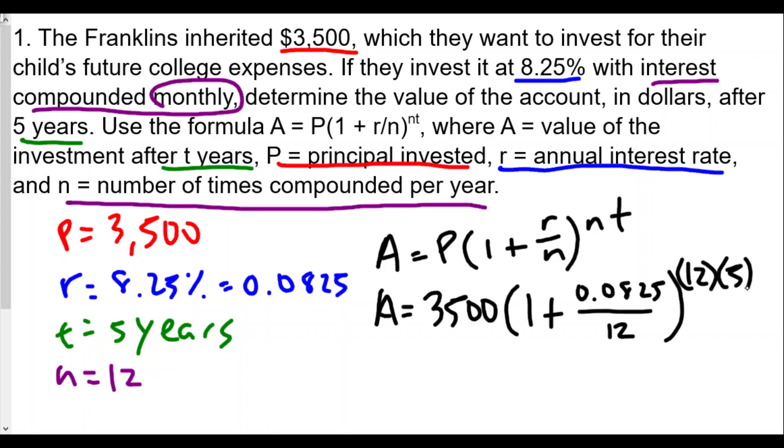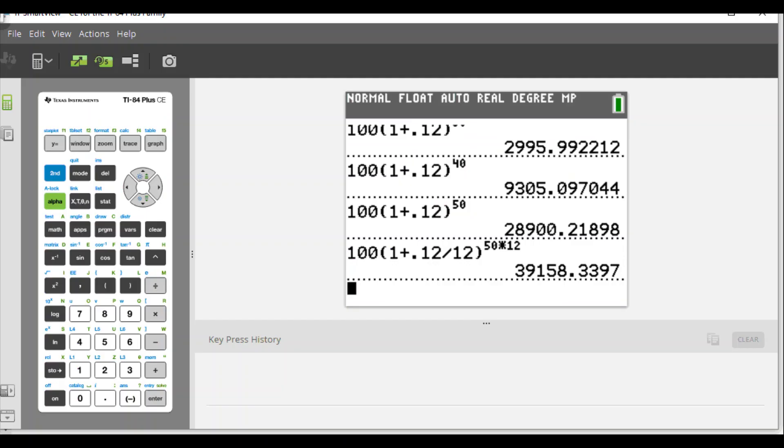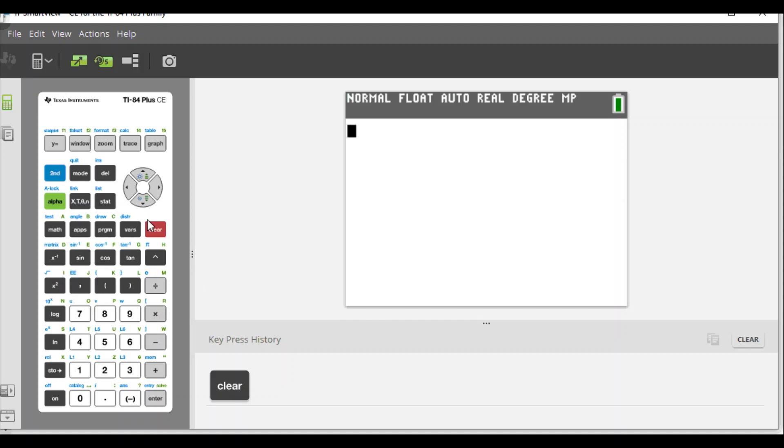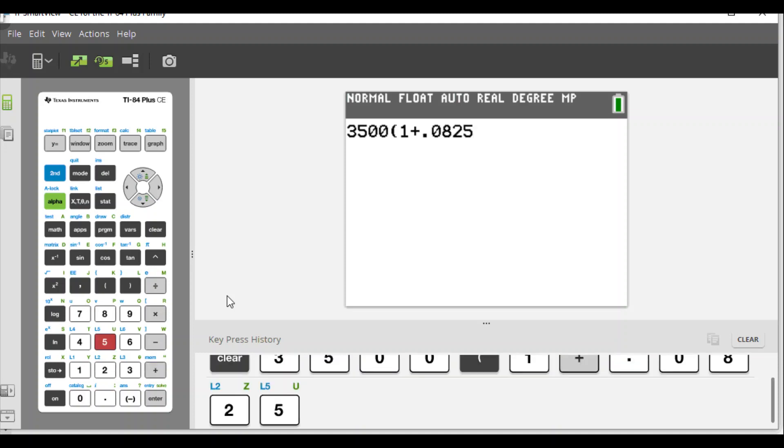We'll need our graphing calculator. We have the initial value 3500, then one plus our interest rate 0.0825 divided by the number of times interest is compounded which is 12, close parenthesis, then raise to the power of n times t which is 12 times 5.